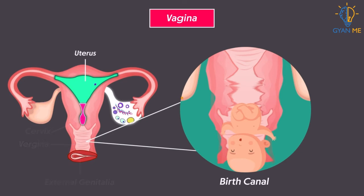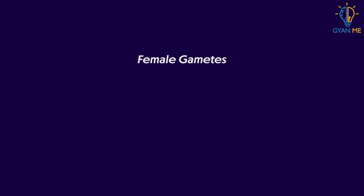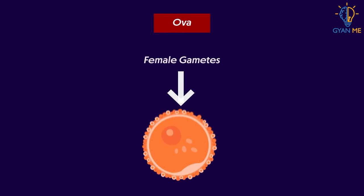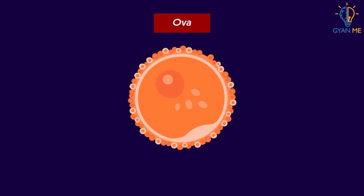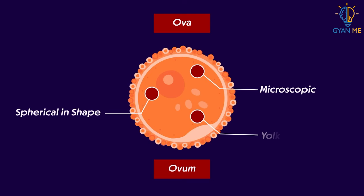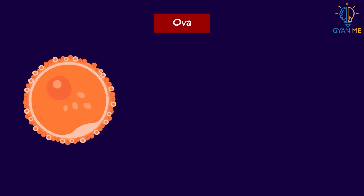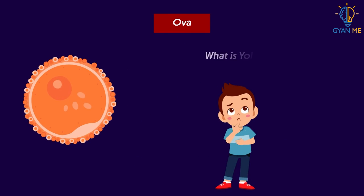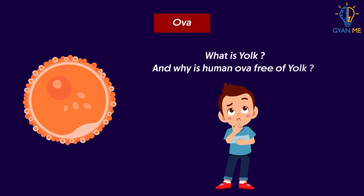Now students, let us see the structure of the female gamete, that is, ova. The matured ova — singularly called ovum — is microscopic, just like the human sperm. It is spherical in shape and almost yolk-free. Students, pause the video, take a break, and try to find out: what is yolk, and why is human ova free of yolk?